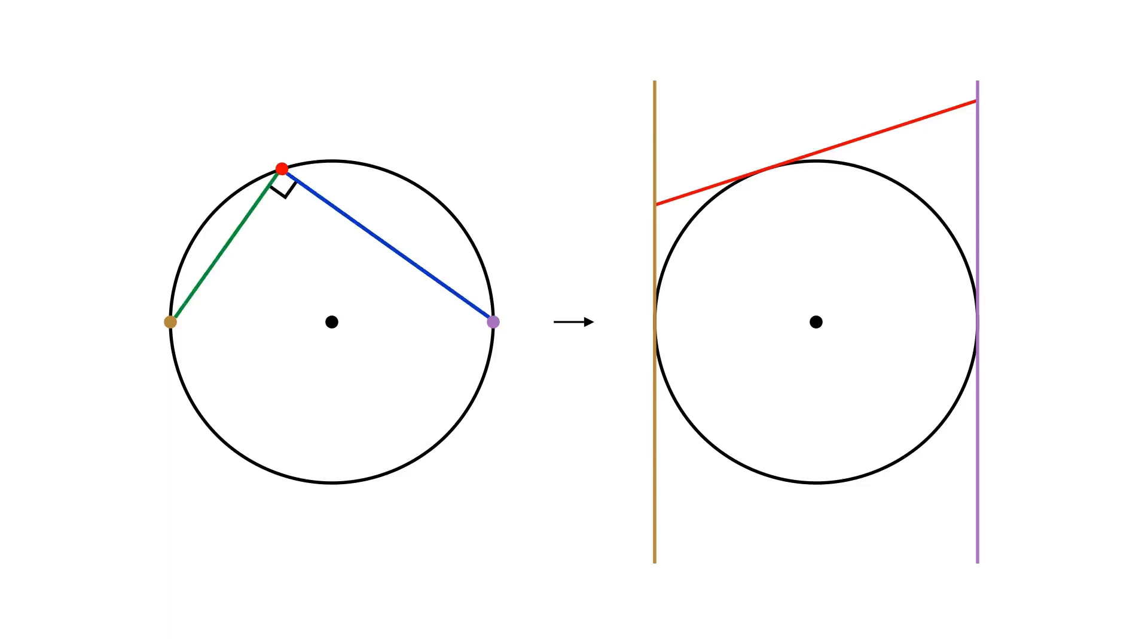Green line passes through the orange and the red point, so the green point must lie on both the orange and the red line. That means it has to be the intersection of those lines. Analogously, the blue line turns into the blue point at the intersection of the red and the pink line.